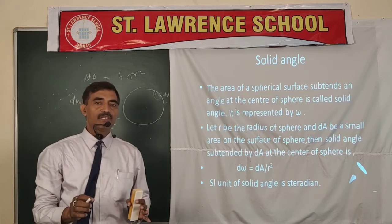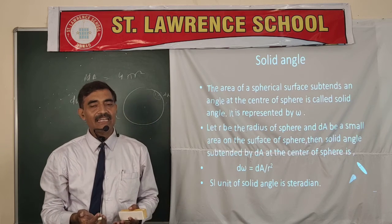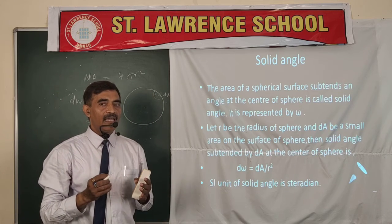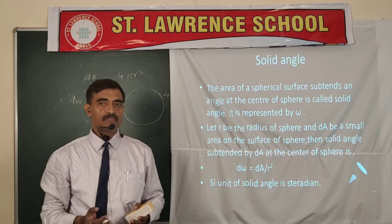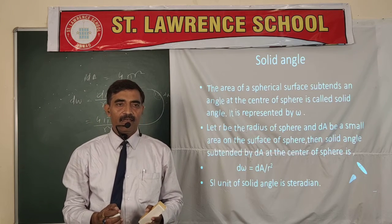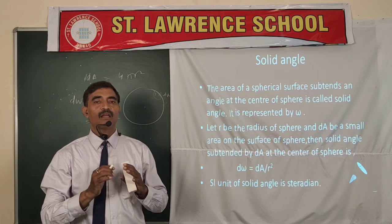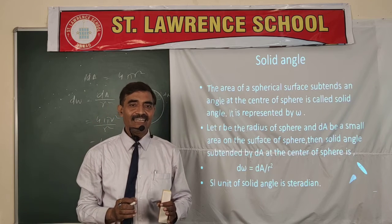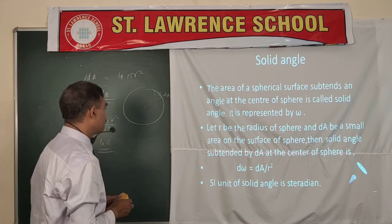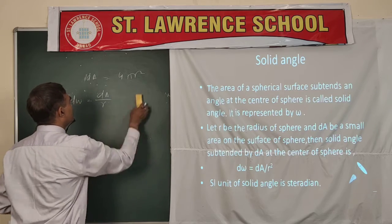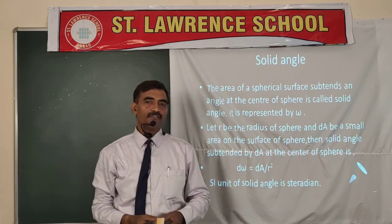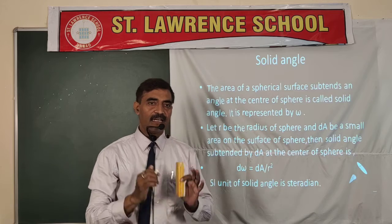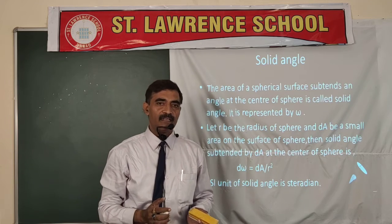The total solid angle subtended by the whole spherical surface at its center is 4π. If we generalize: if any point lies inside a closed surface of any shape, then the solid angle subtended by that closed surface at any interior point will be 4π. Whatever the shape of the closed surface and whatever the position of the point — provided it is inside the surface — the closed surface subtends an angle of 4π at the interior point.